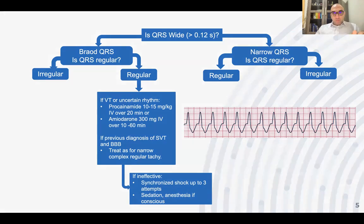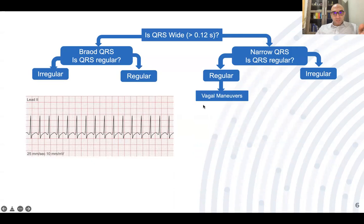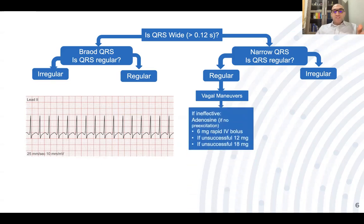Now for narrow complex tachycardia: if it is regular with a high heart rate — like 180, 160, or 150 — most probably this is SVT or supraventricular tachycardia. First, start with vagal maneuvers such as asking the patient to perform a Valsalva maneuver, or placing ice on the patient's face, especially in children.